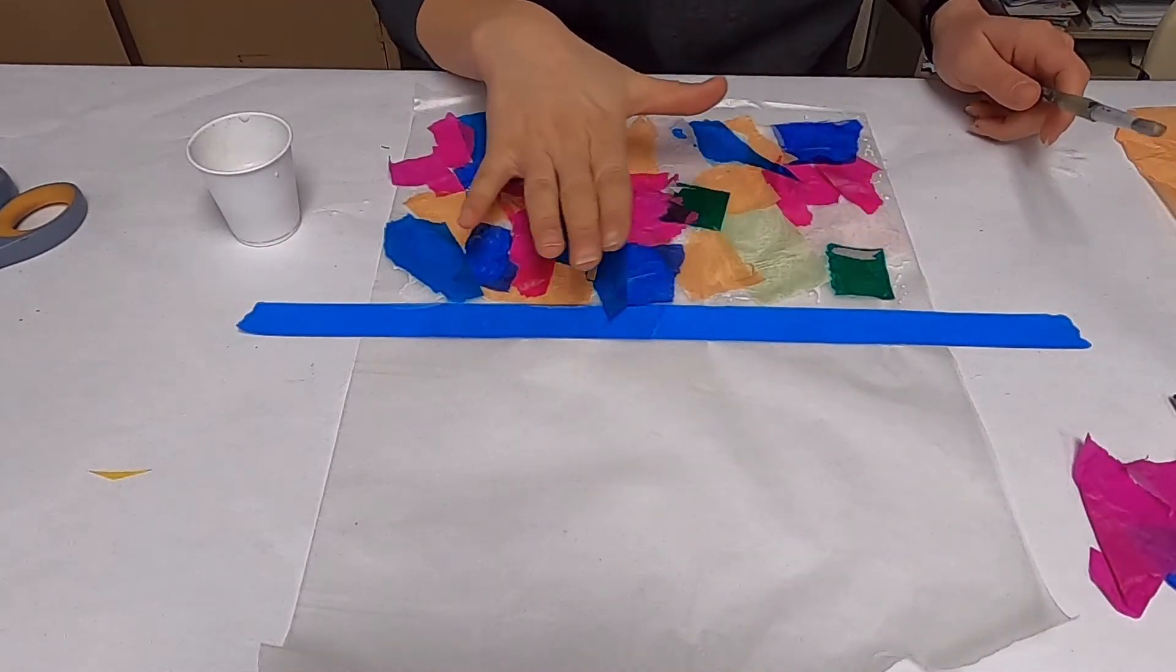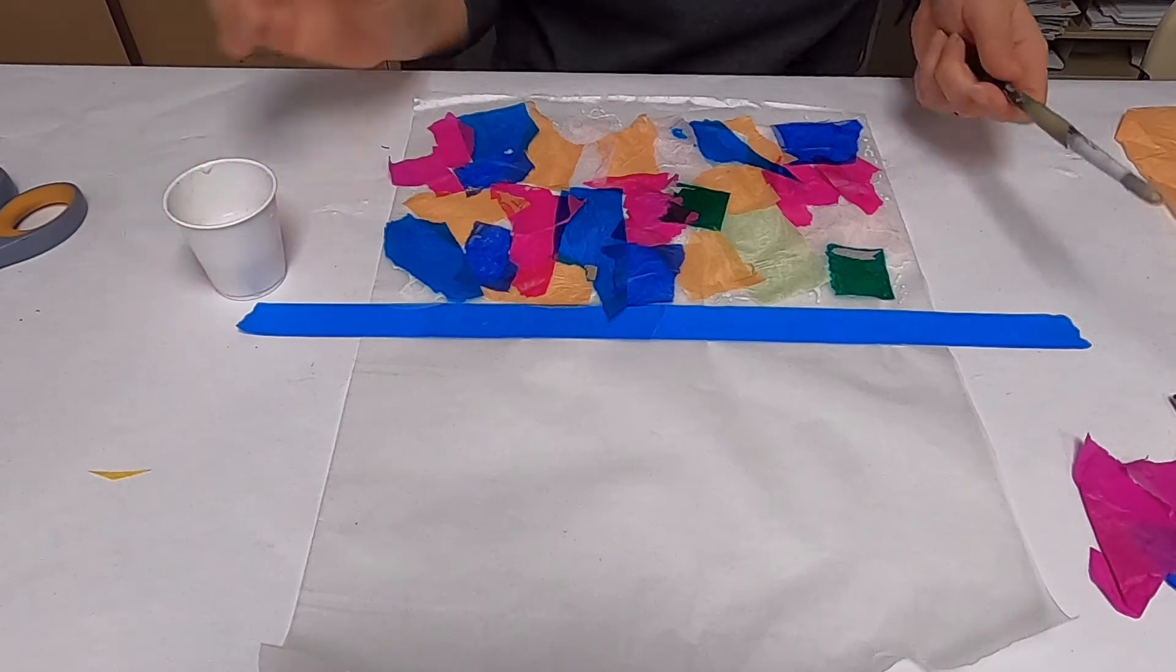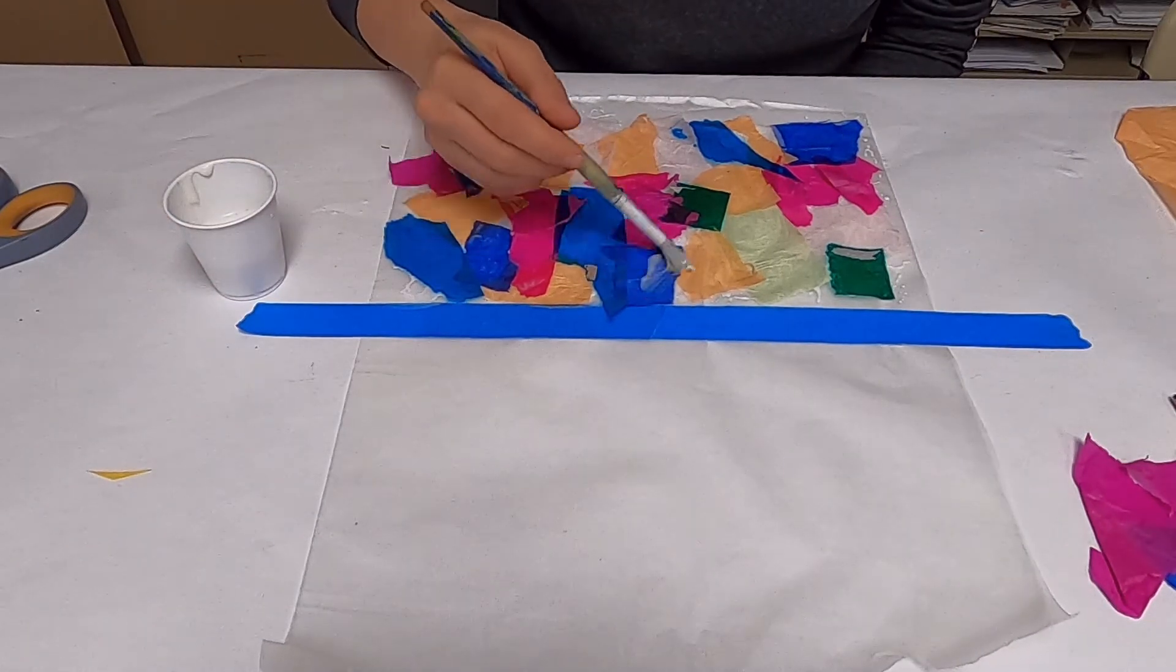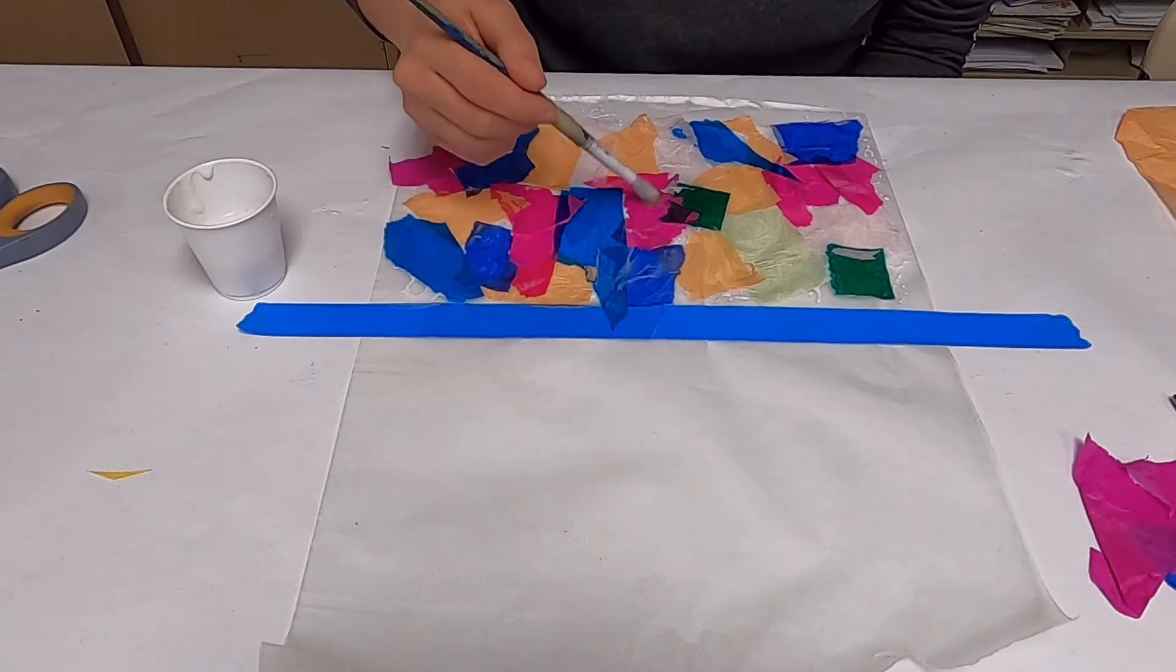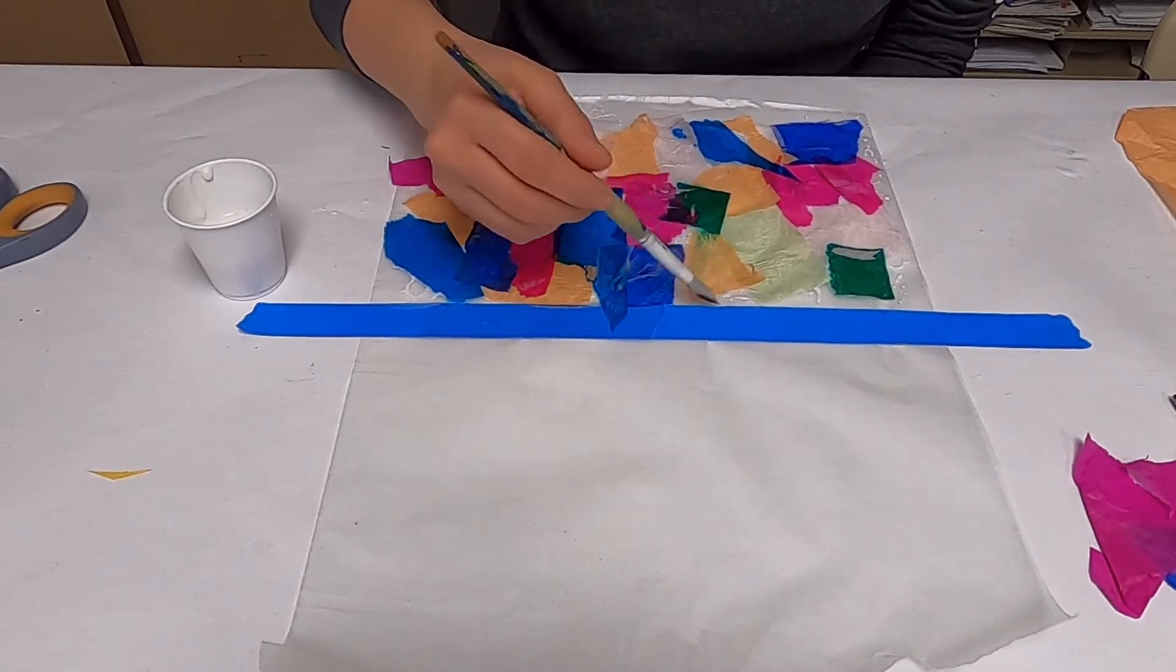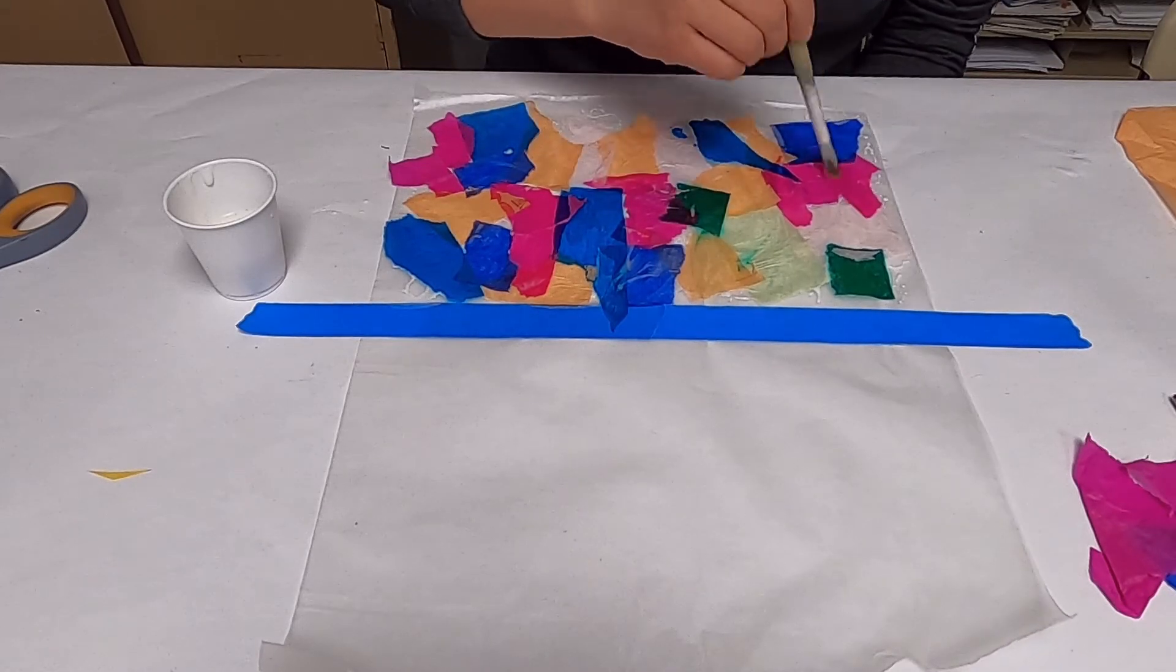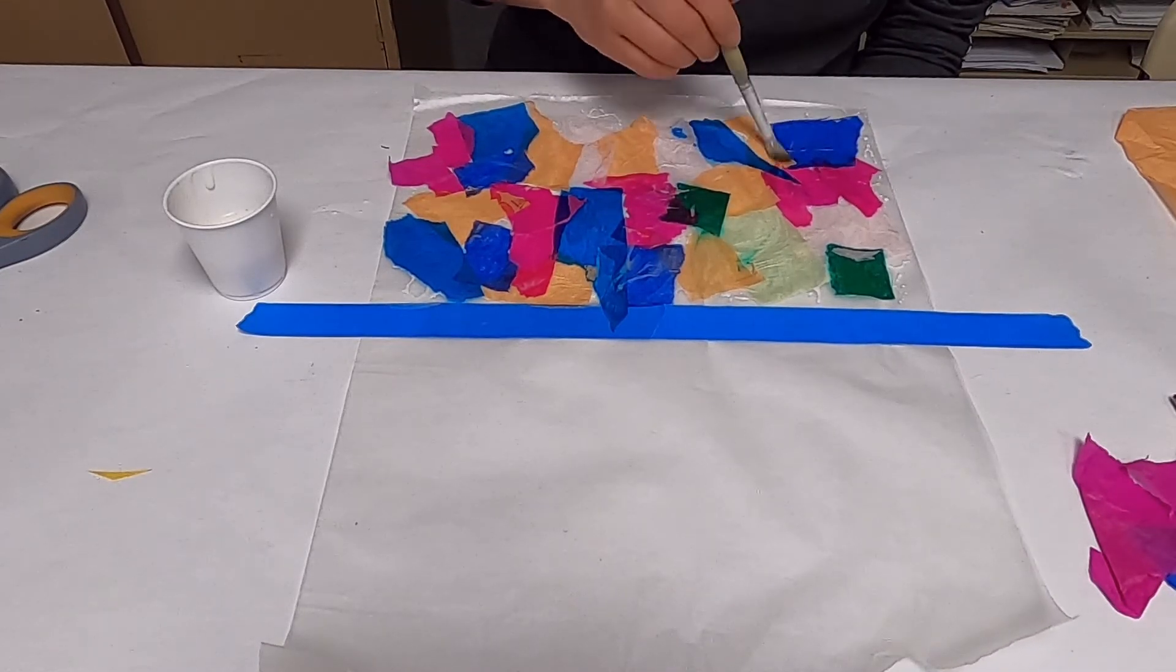Once you've covered this whole area with tissue paper pieces, paint a layer of glue on top. You want to seal these all in and get them nice and wet with your glue mixture.